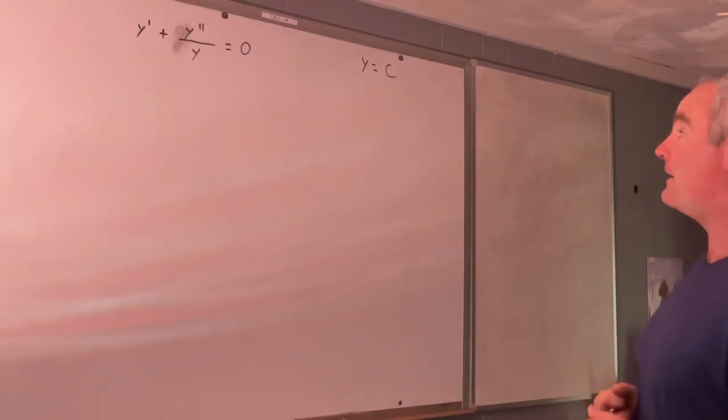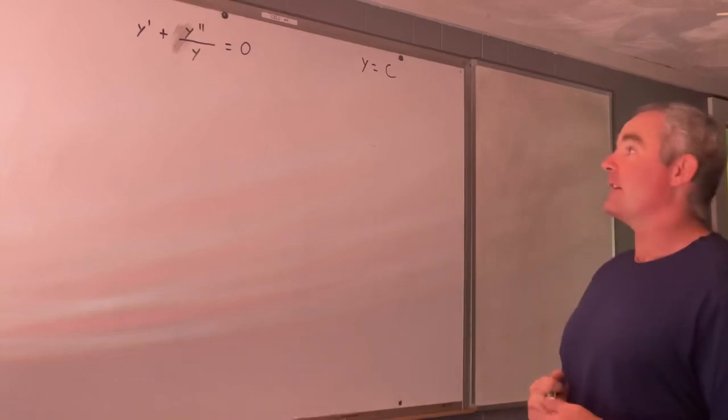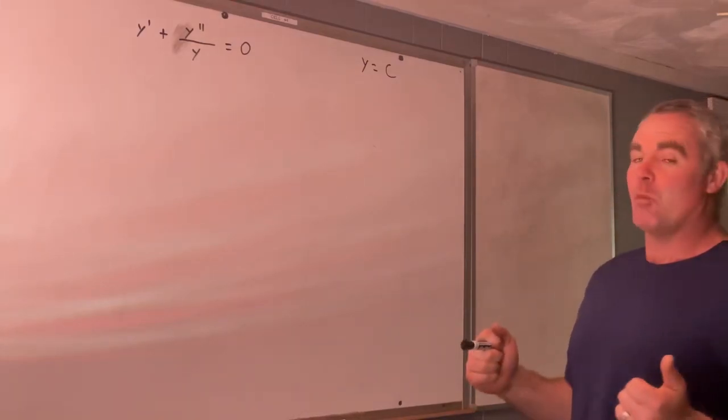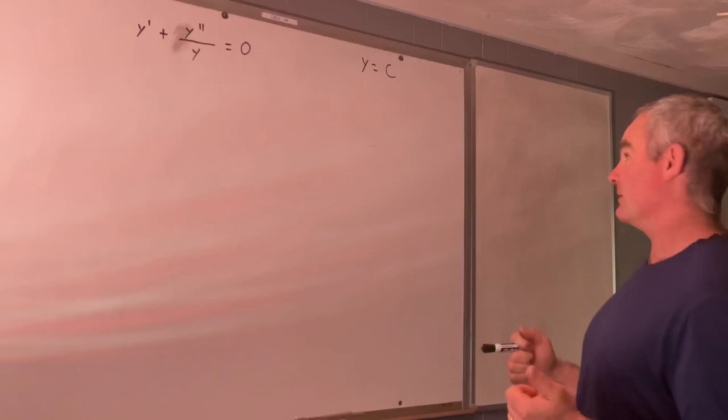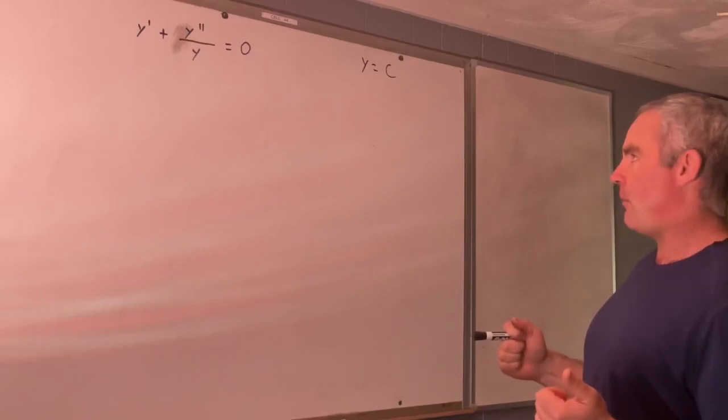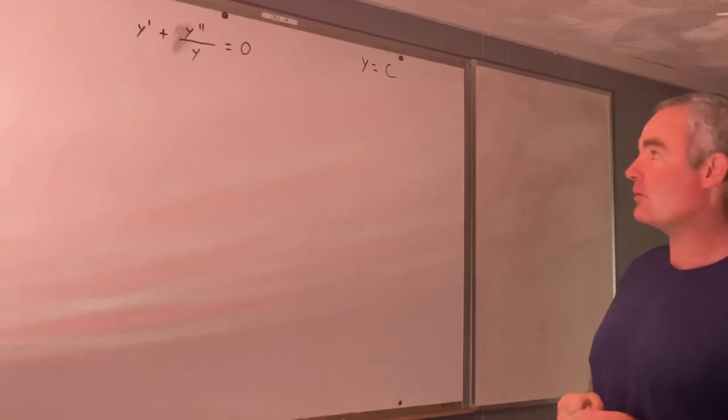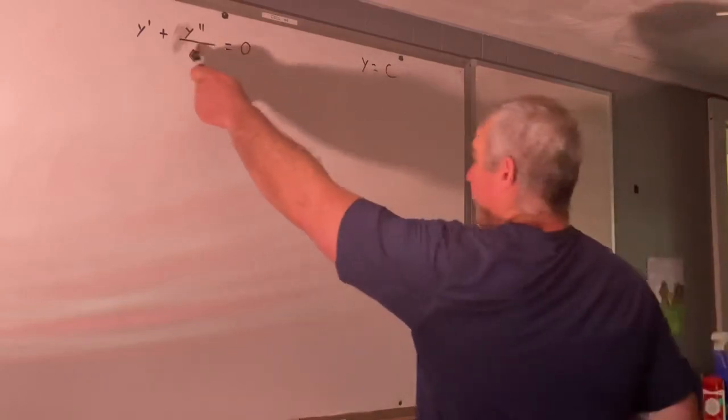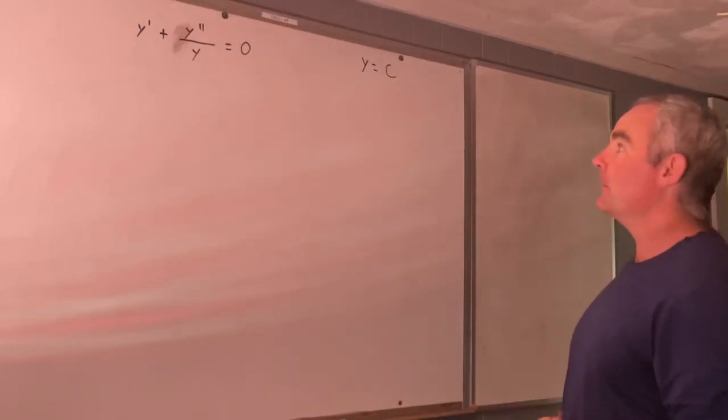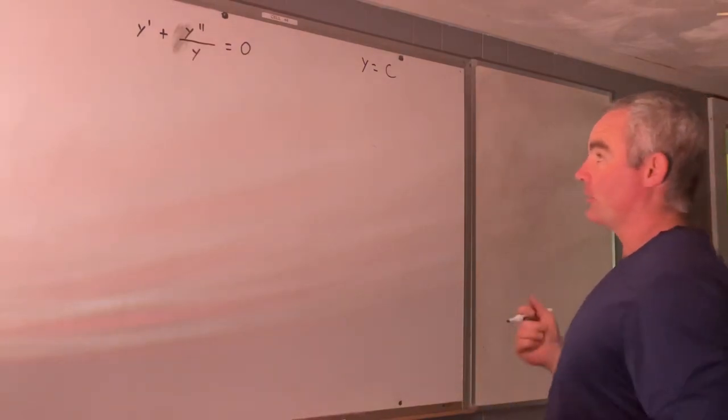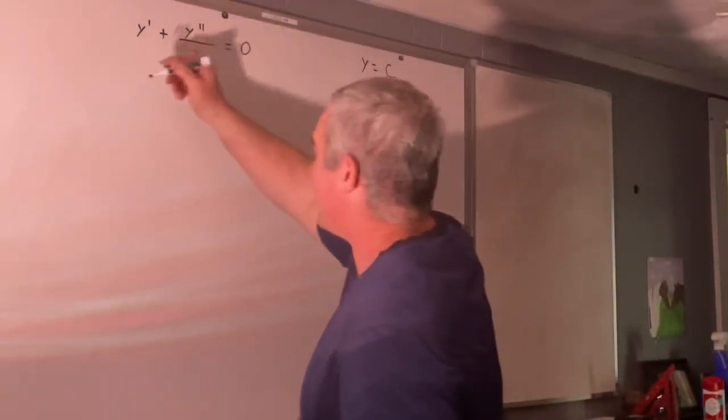But first, I have to justify that. You can only multiply both sides by y as long as y is not 0, and it isn't because y is equal to 0 does not satisfy that differential equation. Plus, we're dividing by y and you don't divide by 0. So it's totally valid to multiply both sides by y.